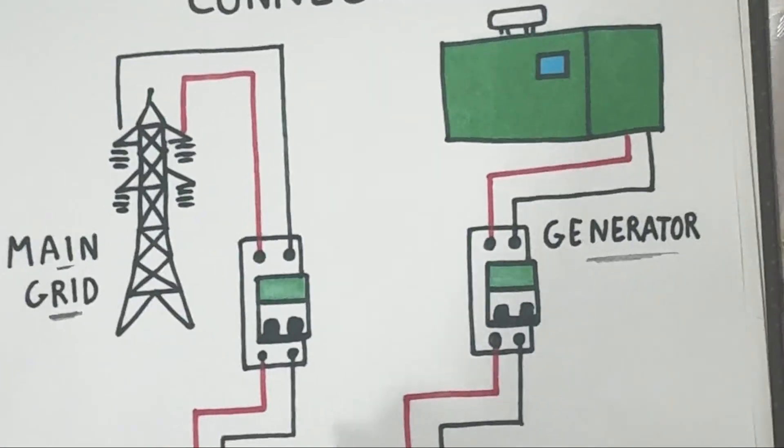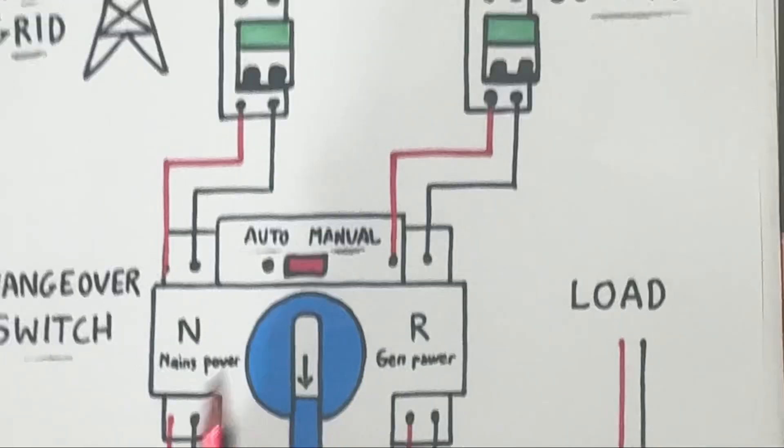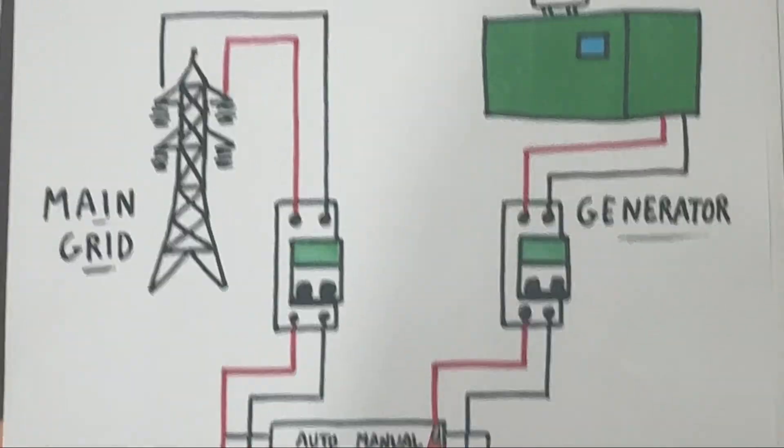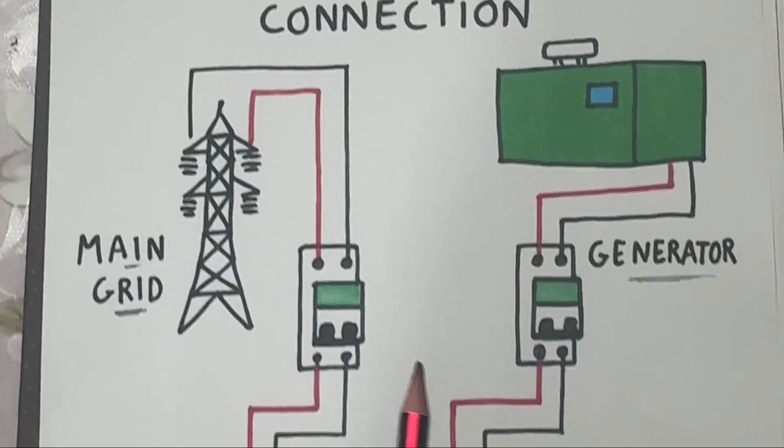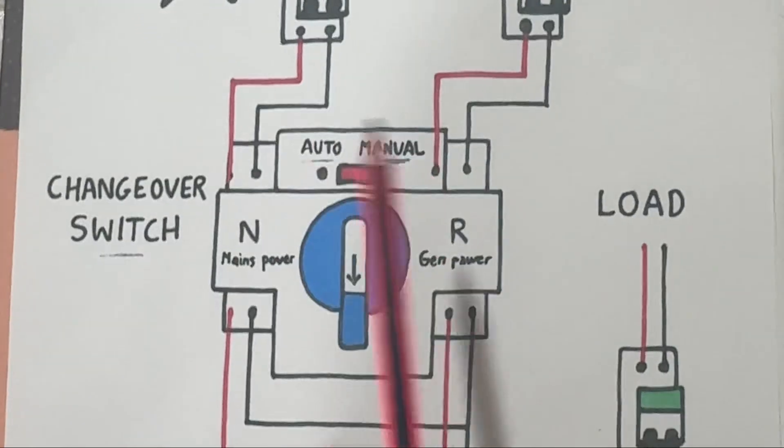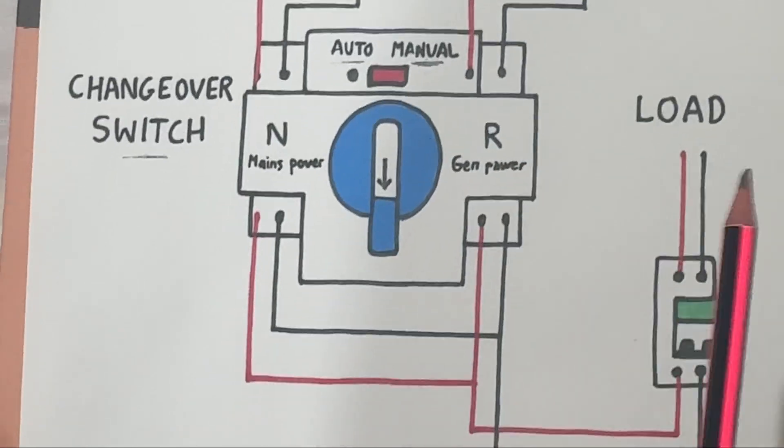Normal operation: grid power is on, load runs on the main supply. Power failure: grid power goes off, generator starts automatically. Transfer: ATS switches the load from grid to generator.